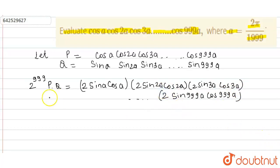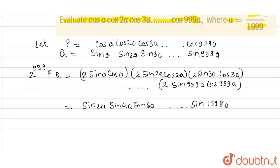We know 2 sin θ cos θ equals sin 2θ. So we can write this as sin 2a sin 4a sin 6a up to sin 1998a.